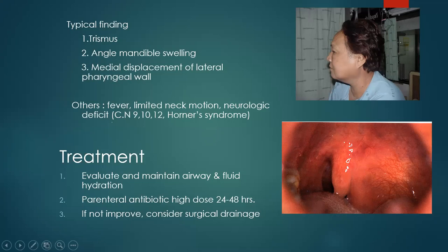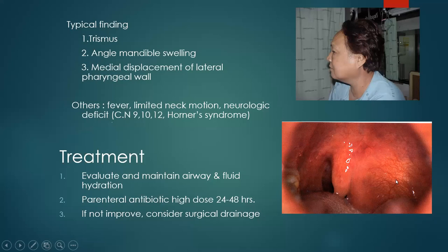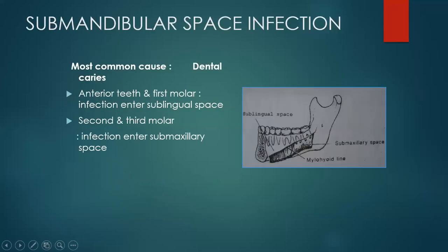Management includes basic investigations — CBC, RBS, LFT, ESR, C-reactive protein as markers of inflammation — and CT scan imaging to see the location of the pus. In clinic, you can put in a needle and aspirate to confirm it is an abscess, then start the patient on high-dose parenteral systemic antibiotics. If they do not improve or swelling does not go down, take them to theatre for surgical drainage. You make an incision, drain the abscess, break the locules with artery forceps, irrigate, and send the patient back to the ward.